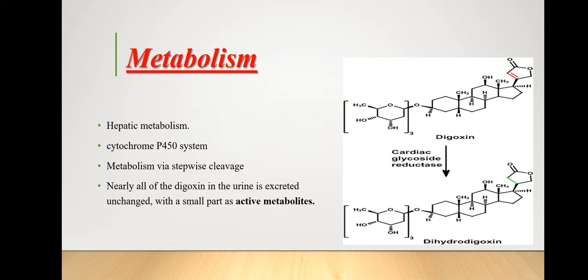The four metabolic pathways are: active drug to inactive metabolites; active drug to active metabolites; inactive drug to active metabolites; and active drug to highly toxic metabolites. The metabolism of digoxin is independent of the cytochrome P450 system and not involved in the induction or inhibition of the CYP450 enzyme system. A very small amount — almost 10 percent — is metabolized in the liver via stepwise cleavage of the sugar moiety and lactone ring reduction.